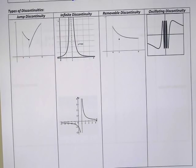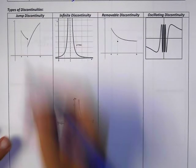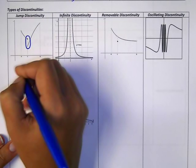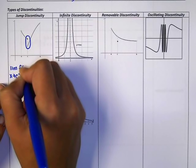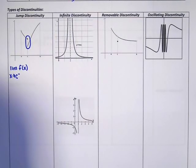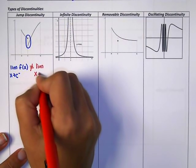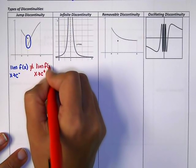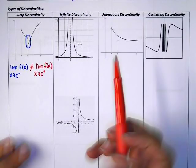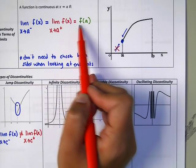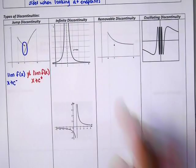Going back to what we talked about yesterday with different types of discontinuities: for a jump discontinuity, we say there's a discontinuity because the limit as X approaches C from the left does not equal the limit as X approaches C from the right. It does equal F of C, so we can't include that third component — the two sides just don't match.